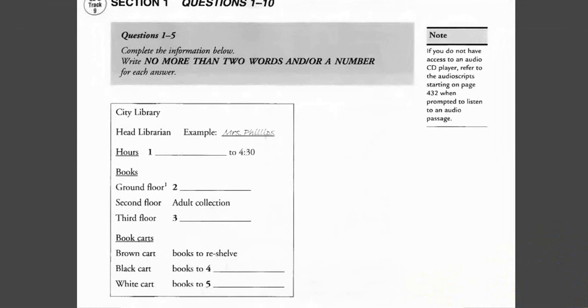You will hear a number of different recordings, and you will have to answer questions on what you will hear. There will be time for you to read the instructions and questions, and you will have a chance to check your work. All the recordings will be played once only. The test is in four sections. Write all of your answers on the test pages. At the end of the test, you will be given ten minutes to transfer your answers to an answer sheet. Now turn to section 1 on page 201.